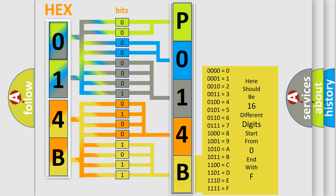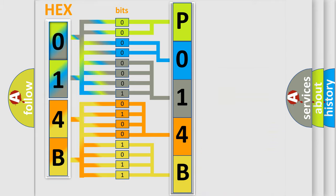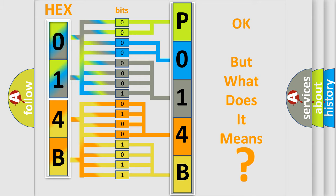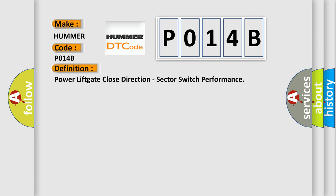We now know in what way the diagnostic tool translates the received information into a more comprehensible format. The number itself does not make sense to us if we cannot assign information about what it actually expresses. So, what does the Diagnostic Trouble Code P014B interpret specifically? The basic definition is: Power lift gate close direction, sector switch performance.